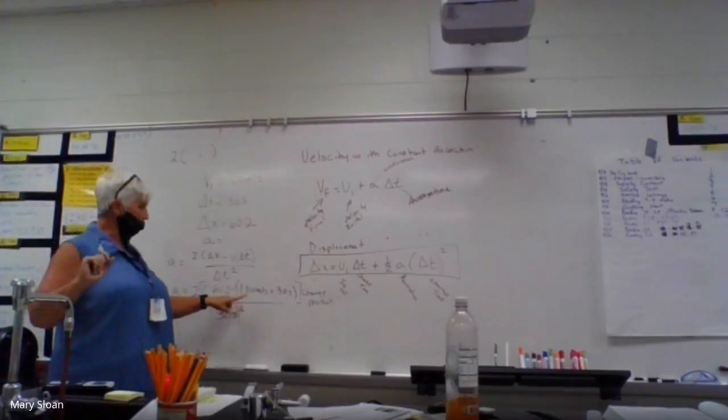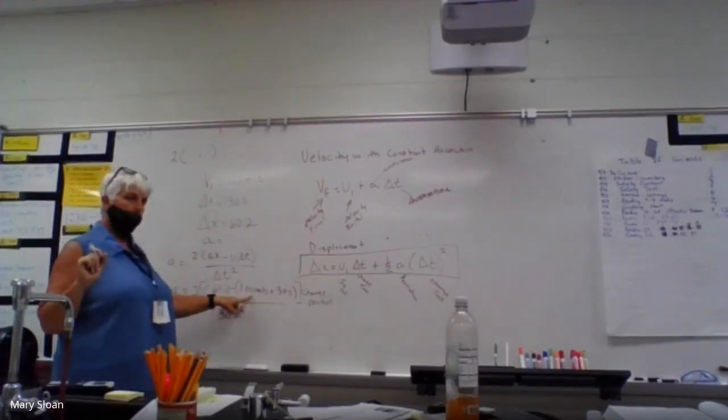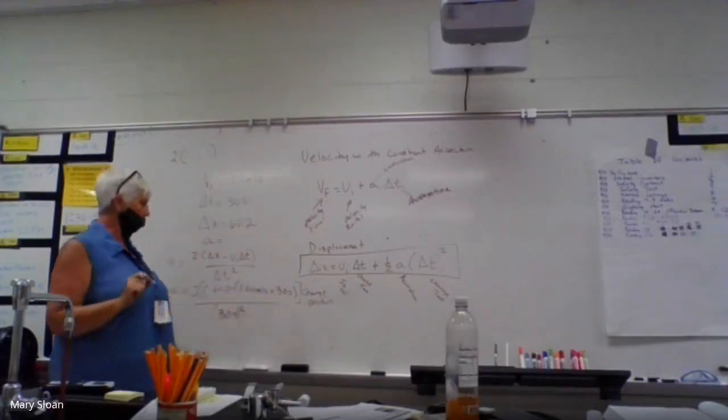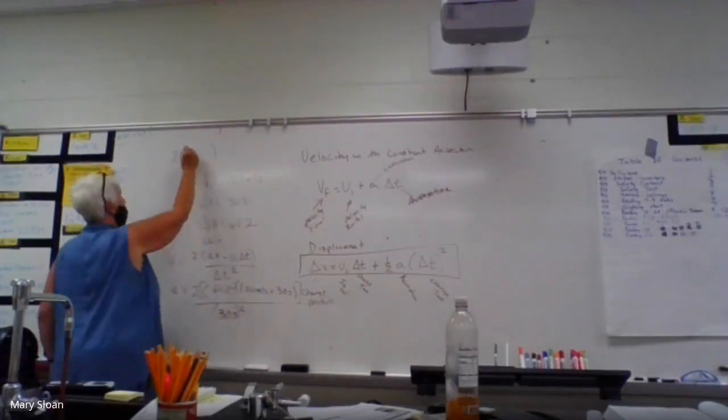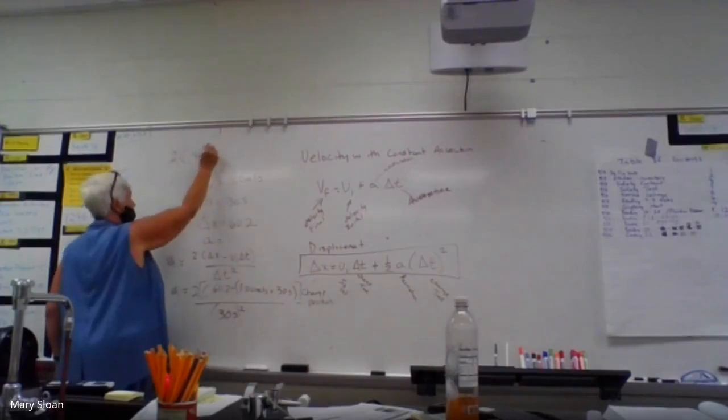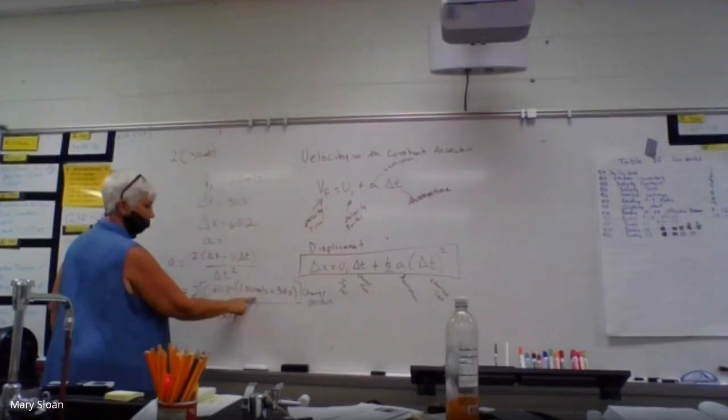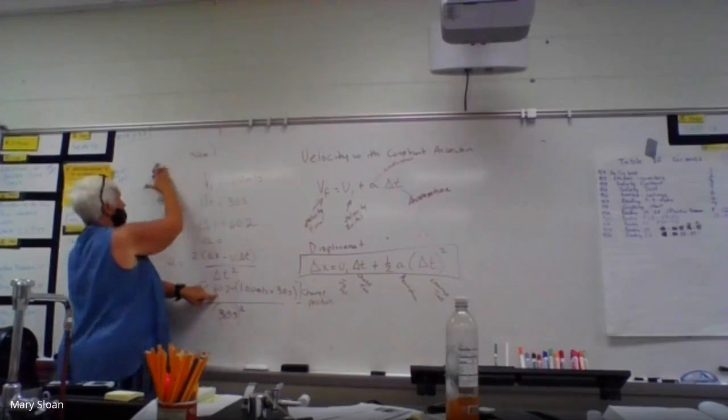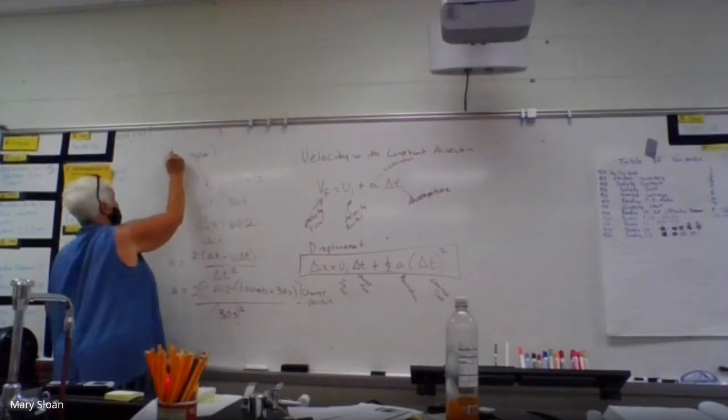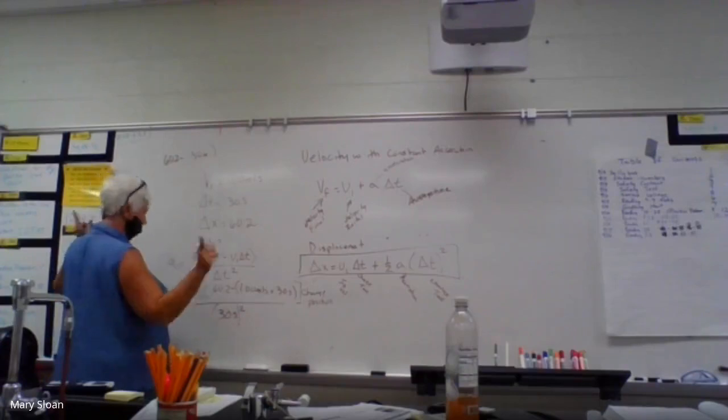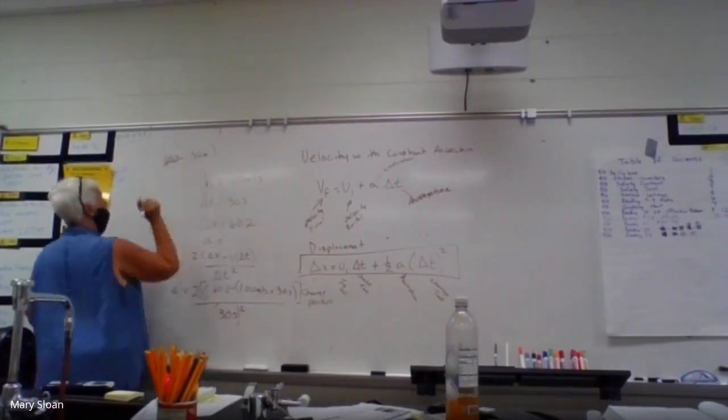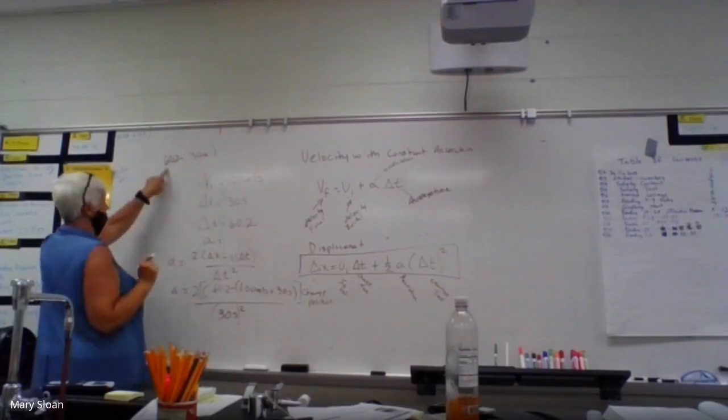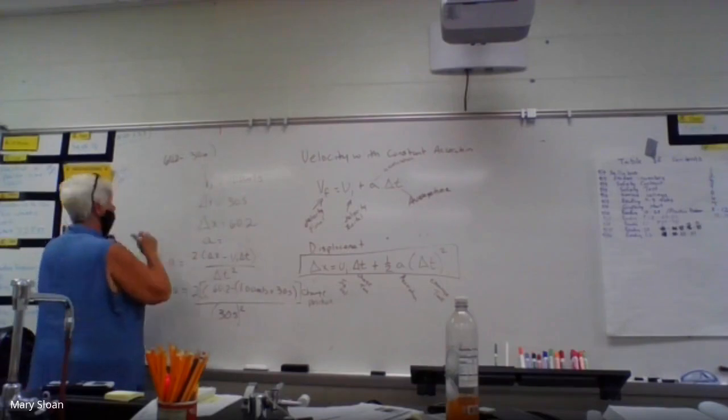So let's do 1.0 times 30, which is 30. 30 what? 30 meters. That's because you're multiplying 30 seconds by 1 meter per second, so the seconds cancel out. So now we're going to take 60.2 and subtract 30. What do we get? 30.2 meters. Now let's multiply that by 2.